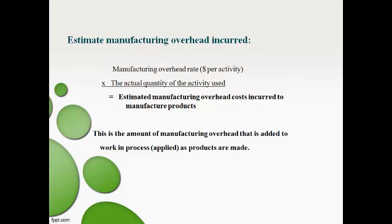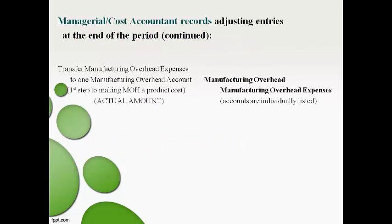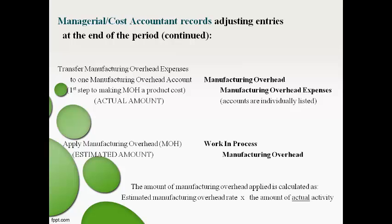The estimated amount is moved from the manufacturing overhead account to the work in process inventory account. The first step is to move the overhead expense to a temporary account until the estimate of the cost to make each product is made. The estimated amount is then moved from the temporary account into work in process. The second step is to move the manufacturing overhead cost to work in process. The amount moved is the predetermined overhead rate multiplied by the amount of actual activity.